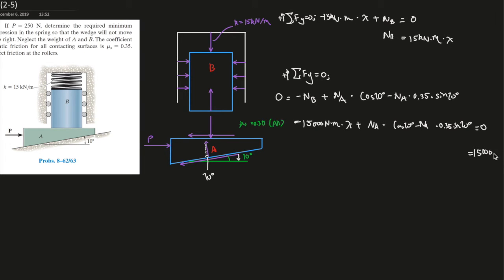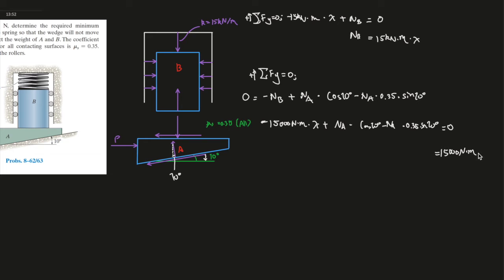So this is 15,000 newton per meters times x. Spring constant equals to the force divided by the change in distance. And this over here, when you simplify the 0.35 times the sine of 10 times the minus the cosine of 10. In the end, it should give you 0.924 Na. So if you divide by 0.924 both sides, simplify Na to one side. This should give you 16,233.4 newtons per meters times the change in distance.